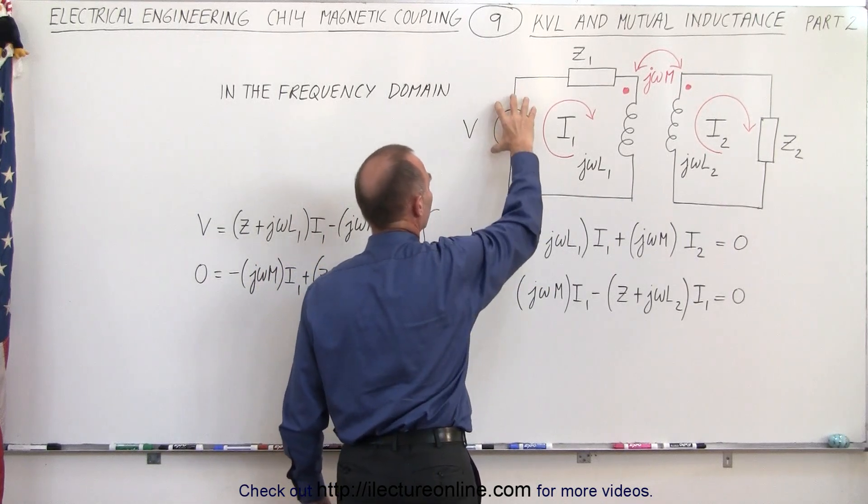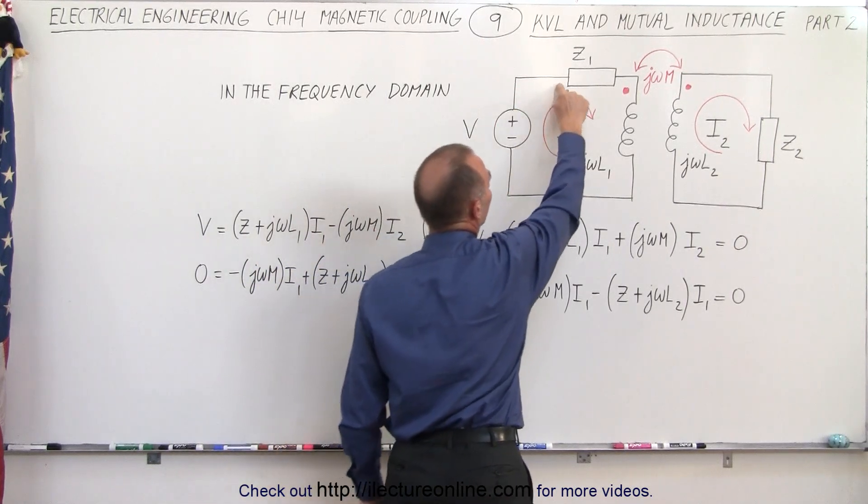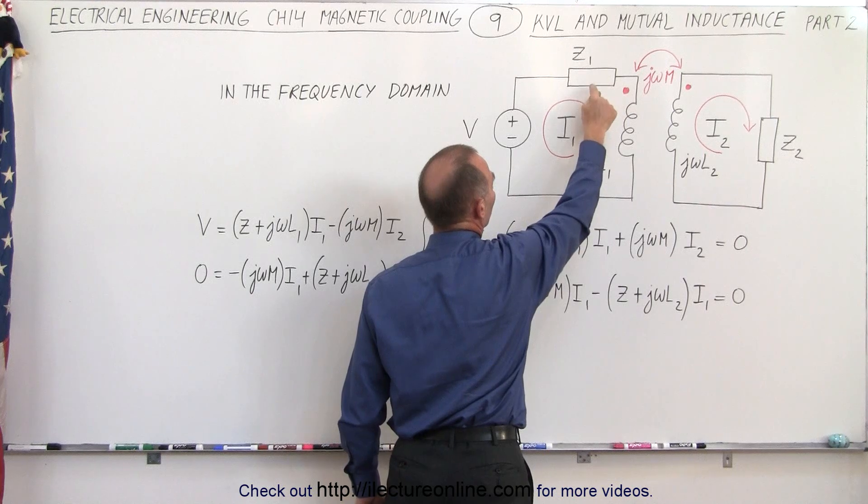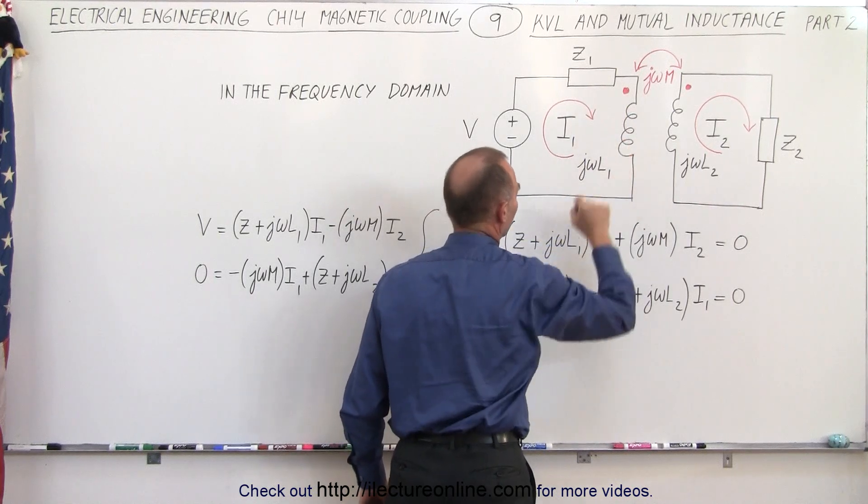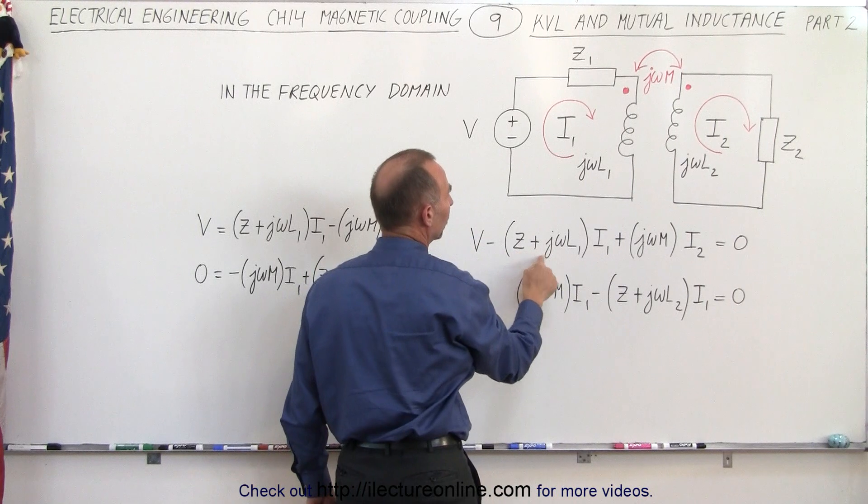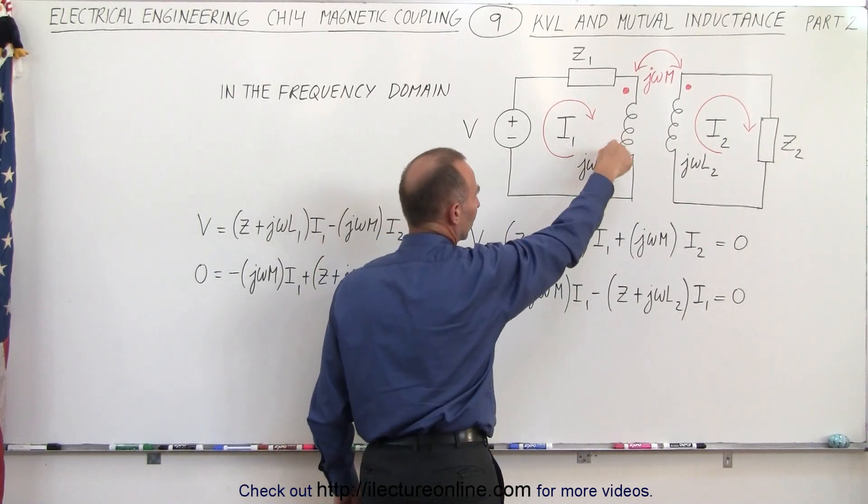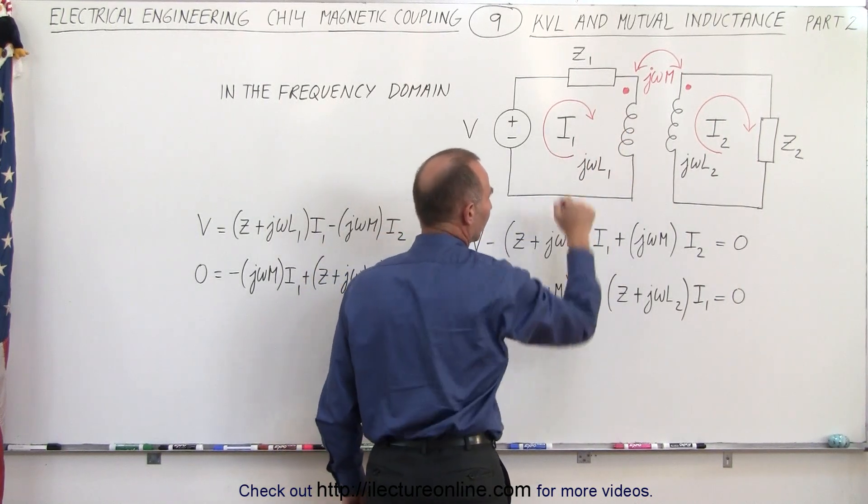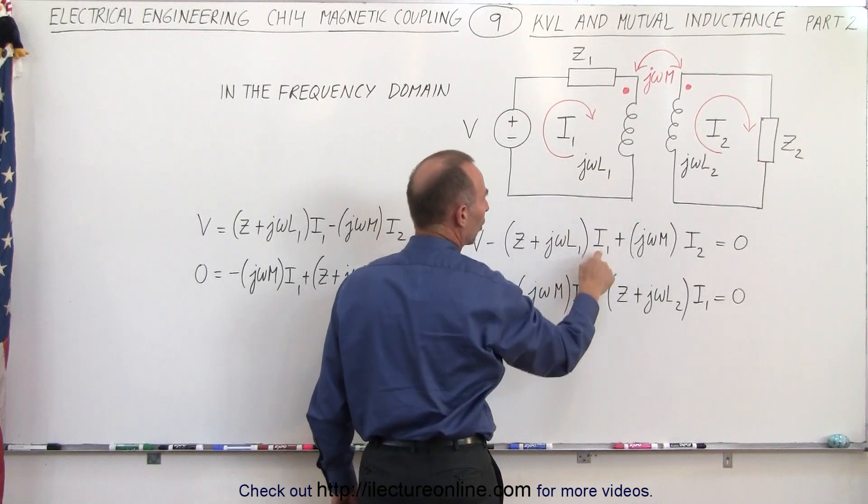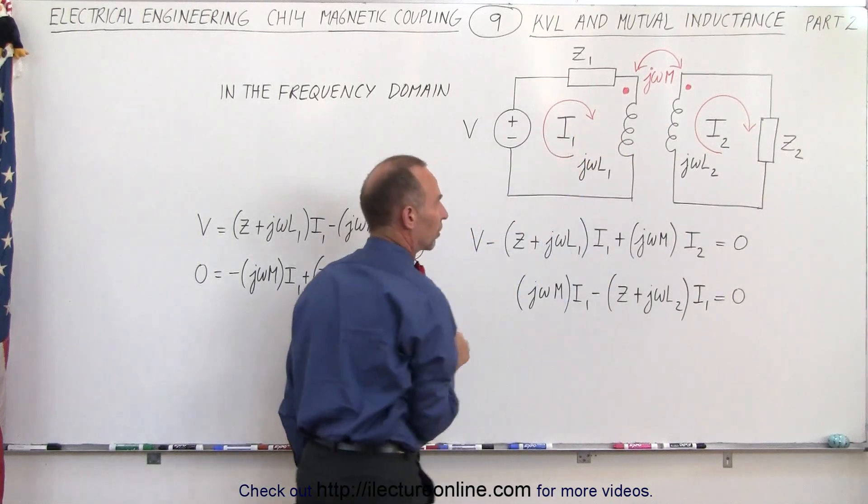We have the voltage rise across the source minus the voltage drop across both the impedance here and the inductance of the coil. So that would be minus Z plus jωL1, because L1 is the inductance of the first coil, times the current in that circuit.